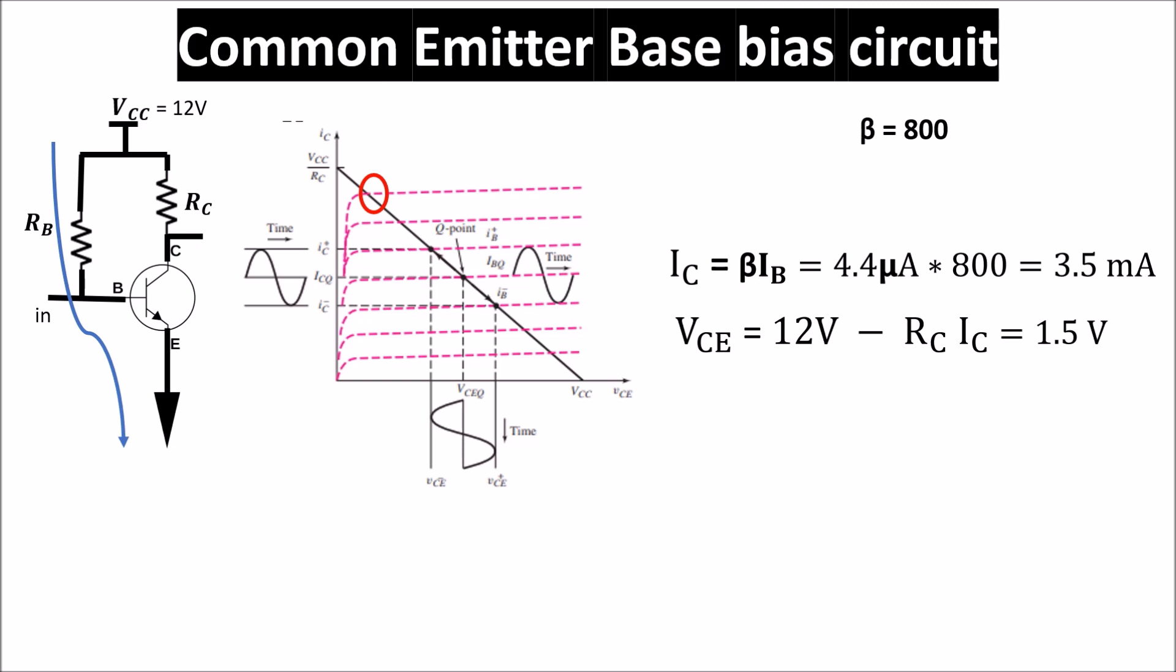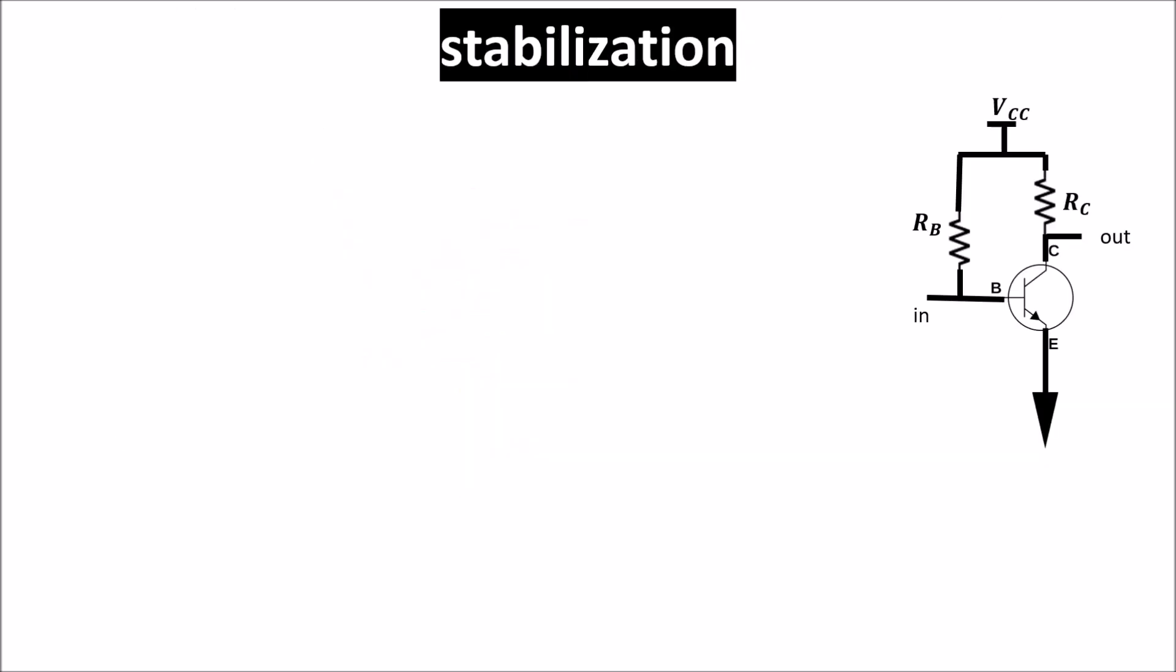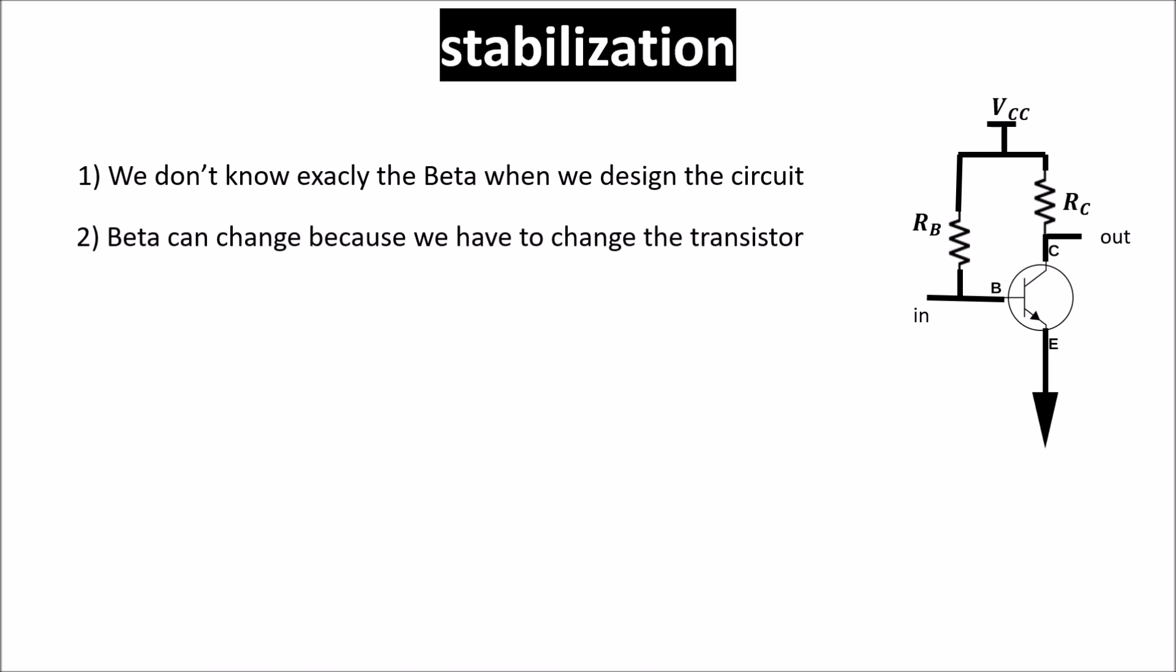Of course we could first measure our BJT beta and later choose the resistors. But even in this way we cannot trust this biasing point because IC is beta dependent and the beta can change for different reasons. The biasing point or quiescent point is defined by the values of IC and VCE. But we saw that in this circuit if beta changes, IC changes and so VCE. So we have to keep in mind some issues. First, as we saw previously, we don't know exactly the beta value when we design the circuit. Second, you may need to change transistor.